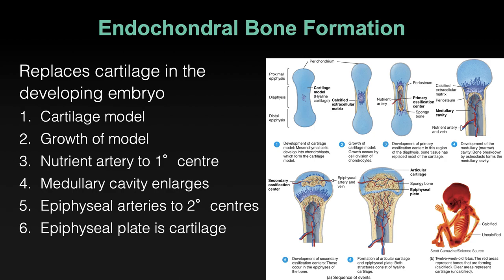This is a 12-week-old fetus. You can see the dark staining areas of the bones that are calcified, and the lighter staining areas where the calcified matrix hasn't been laid down — those are still cartilage. You can imagine the dark staining area spreading outwards to eventually encompass the entire model.